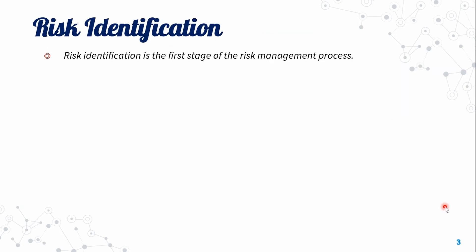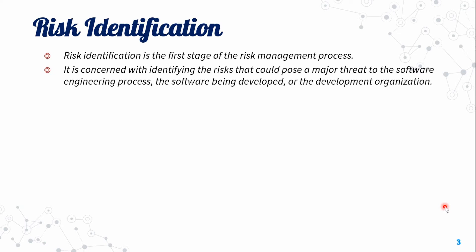The risk management process has a first stage: risk identification. It is concerned with identifying the risk that could pose a major threat to the software engineering process, the software being developed, or the development organization.